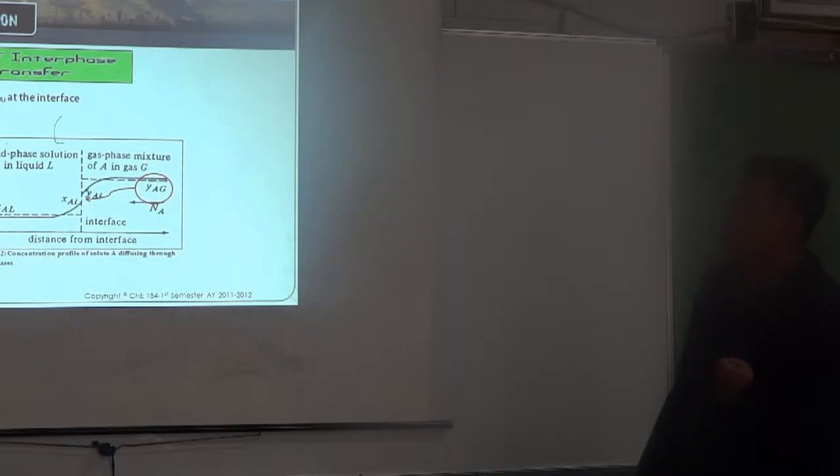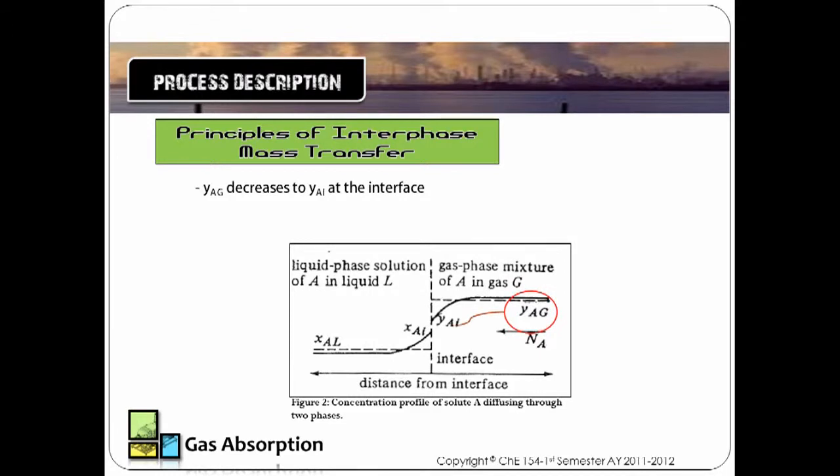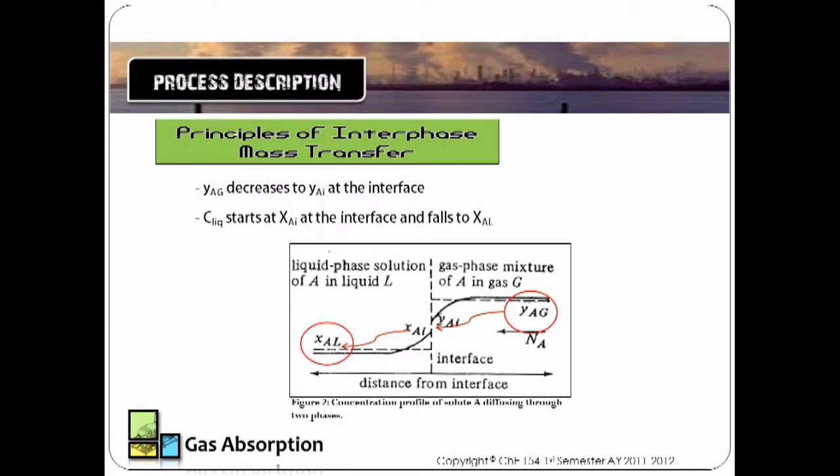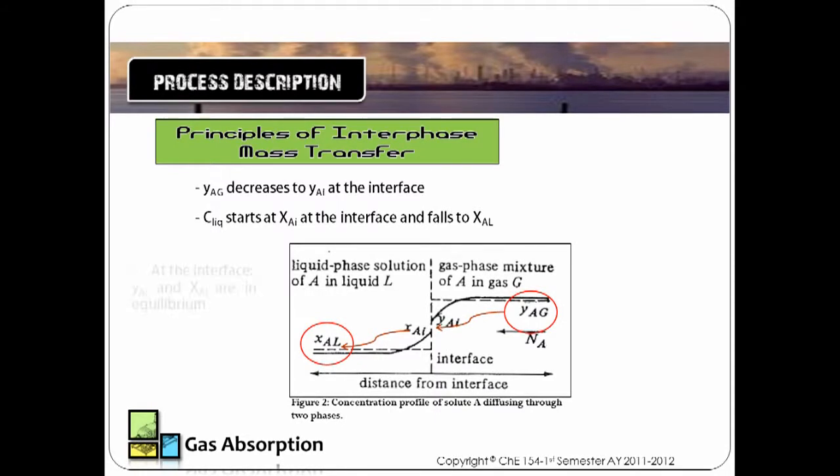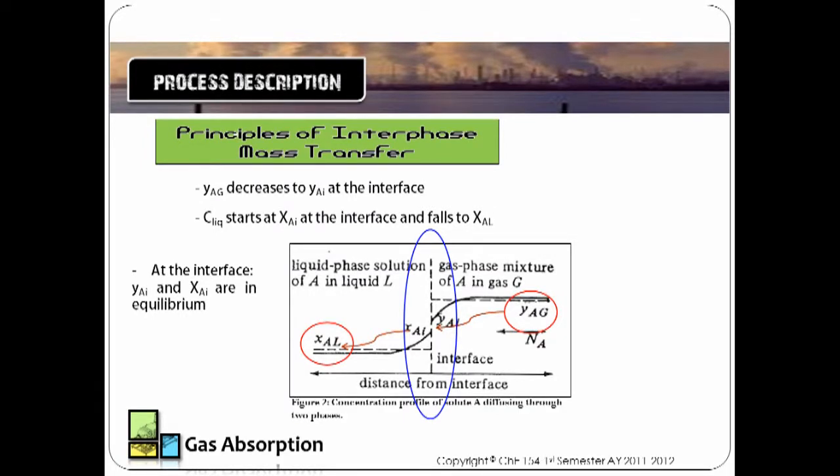YAG decreases as it goes into the interphase or the boundary between the liquid and the gas phase. The concentration of the liquid starts at XAL which is in the interphase and falls in OXAL. At the interphase, denoted by that blue color, YAI and XAI are in equilibrium.